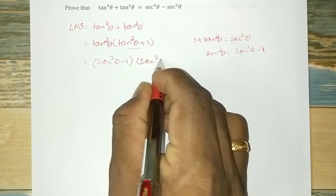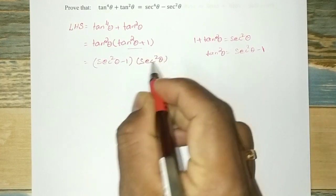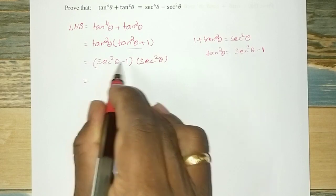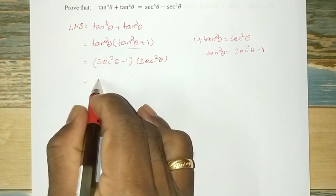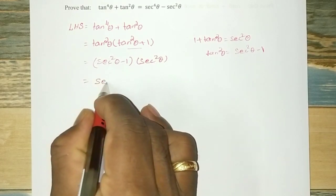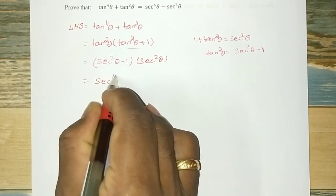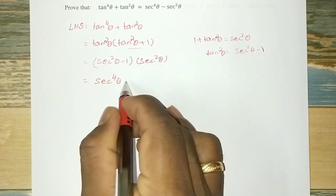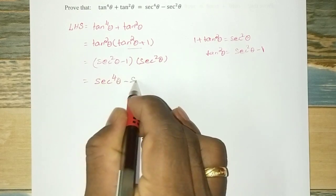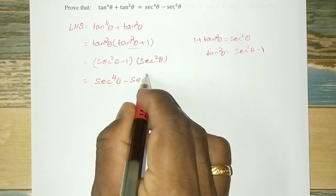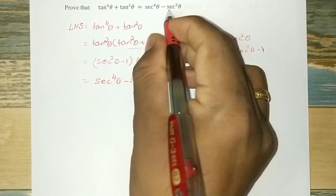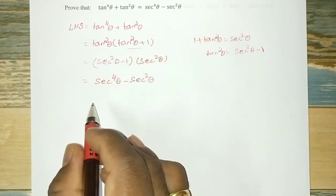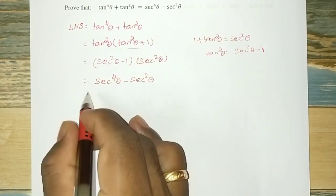So secant square theta multiplied gives us secant square into secant square, that is secant power 4 theta, minus secant square theta. This equals the RHS, hence proved.